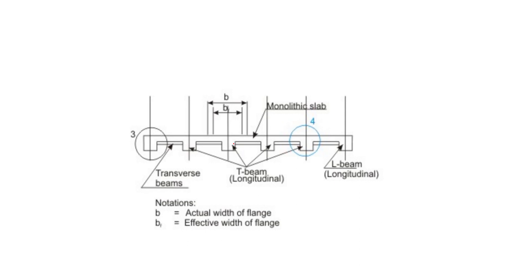Consider the cross-section of a beam-slab arrangement. A particular beam takes load from either side of the slab — from the midpoint of the adjacent slab on each side. Whatever load comes over that tributary portion is transferred to this beam and then to the supporting column or load-bearing wall. The width over which the beam has influence is called b, or the actual width of the flange.